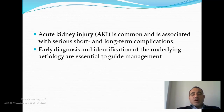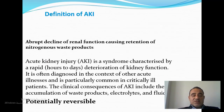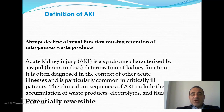Acute kidney injury is common and is associated with serious short-term and long-term complications. This is very vital to be reminded, because if we do early diagnosis and early identification of the underlying etiology, it would be easy to guide management. Acute kidney injury is traditionally defined as an abrupt decline of the renal function causing retention of nitrogenous waste products. Nowadays, AKI is defined as a syndrome — meaning a collection of data — characterized by rapid, hours-to-days deterioration of kidney function, often diagnosed in the context of other acute medical conditions.